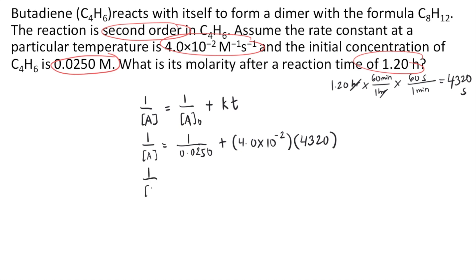Now if you solve the right side of the equation in your calculator, that's 1 over 0.0250, plus 4.0 times 10 to the negative 2 times 4,320.